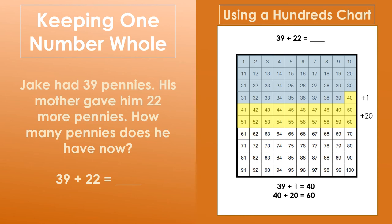Then we can add on one more. 60 plus 1 equals 61. All together, we have added on 22 to the 39 that we started with. So, 39 plus 22 equals 61. Jake has 61 pennies now.